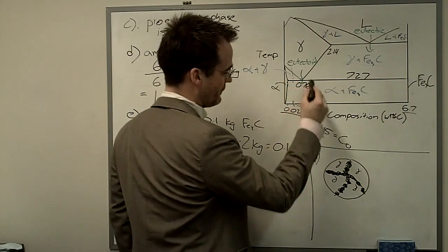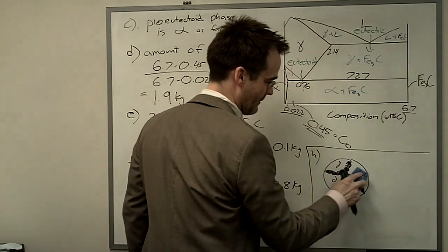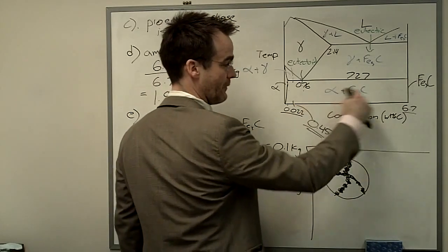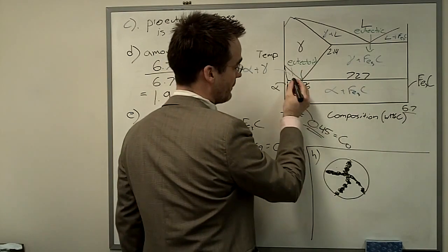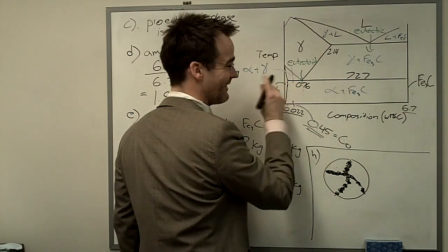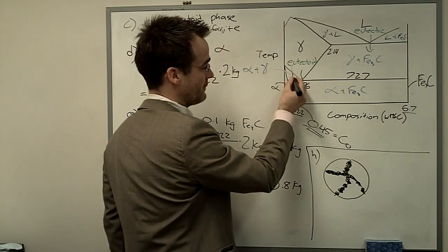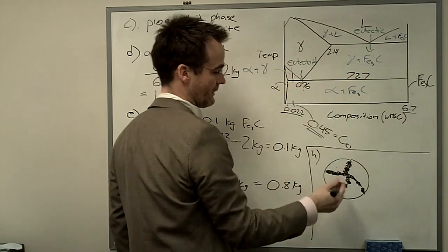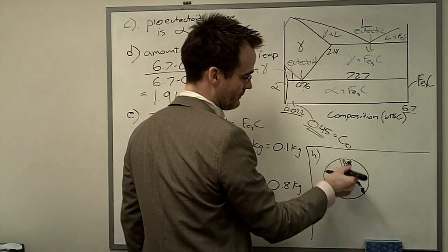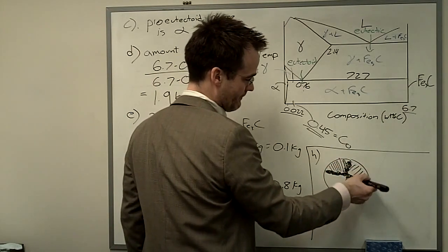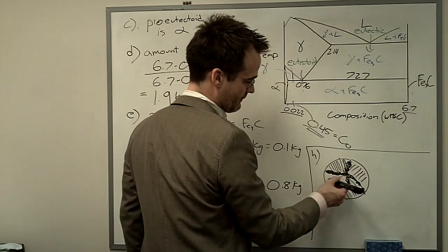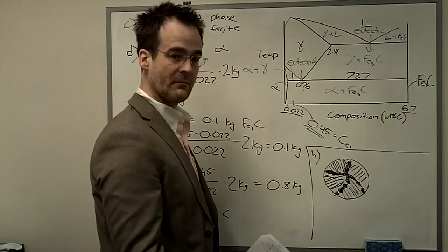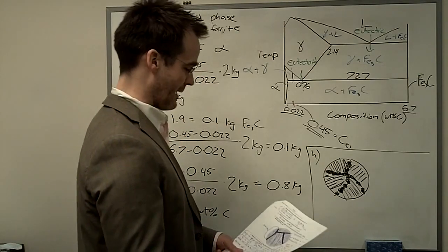And then we finally cross through the eutectoid isotherm, and all of this gamma can't remain as gamma. It's not thermodynamically stable. The gamma is going to transform to alpha plus cementite, or perlite. And what composition does it transform at? Well, the final, if you're drawing a tie line all the way as you cool down through this two-phase region, the final tie line has on the left the ferrite phase at 0.022 and the gamma phase at 0.76. So the gamma is going to transform at the eutectoid composition. And however you want to draw it, just some lamellar structure, it's going to form perlite from within the prior gamma phase grains.